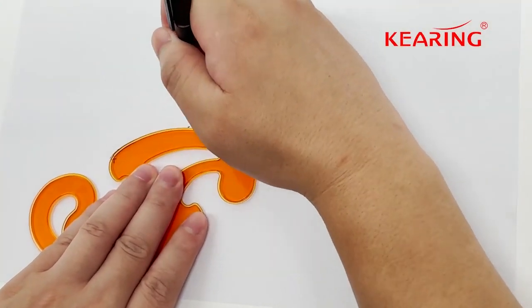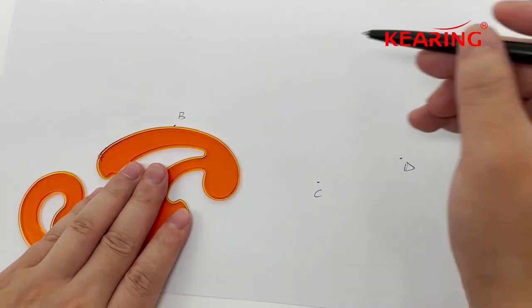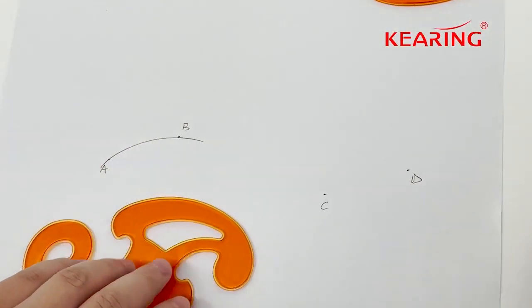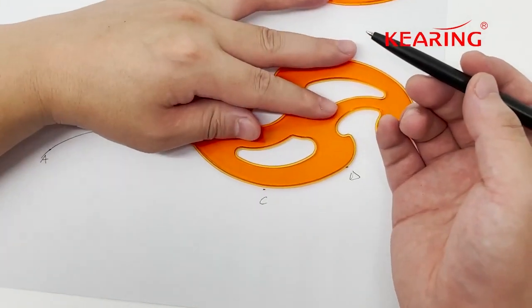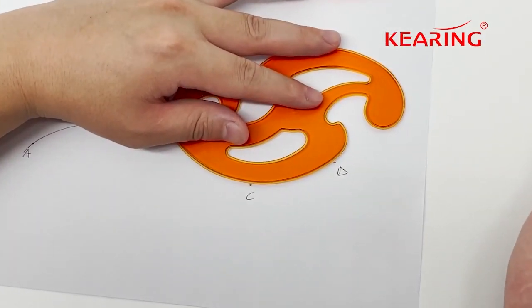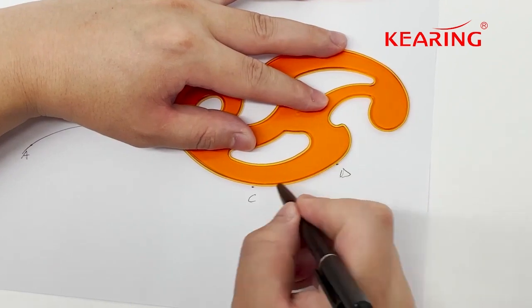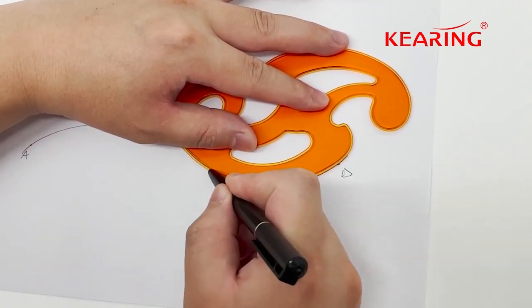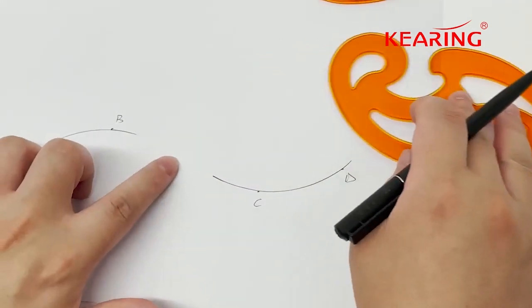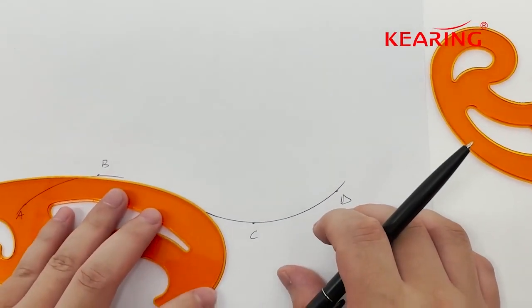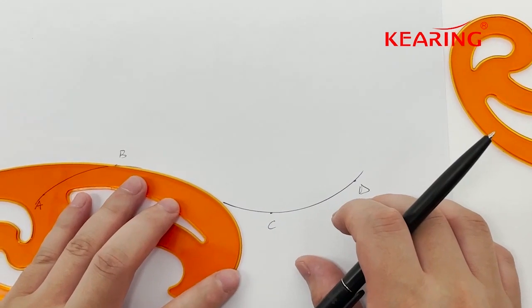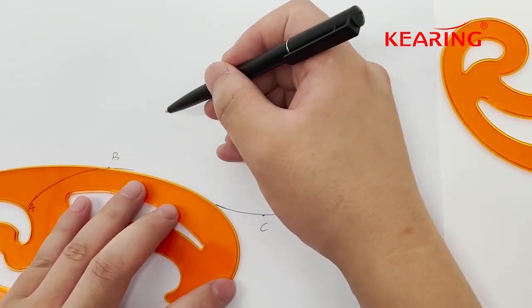Connect these two points, and also use this side to connect C and B. In the middle, we can use this curve to connect them.